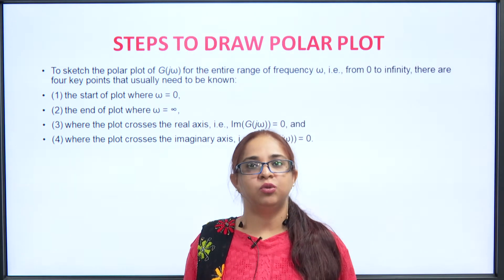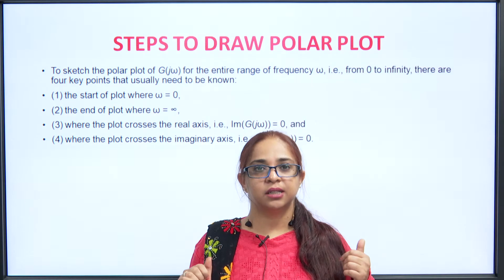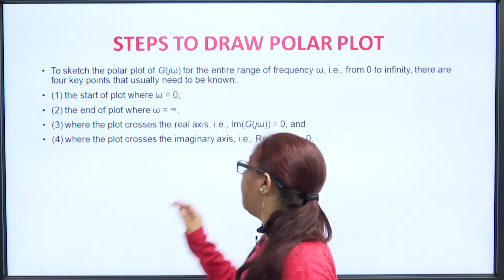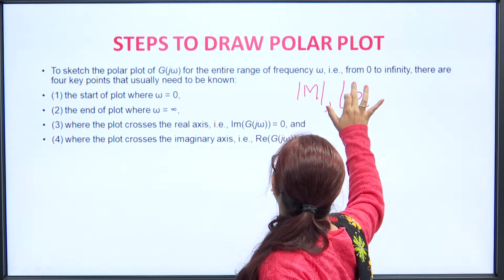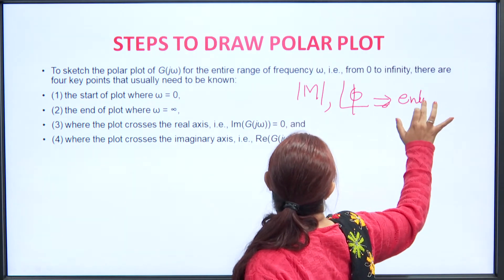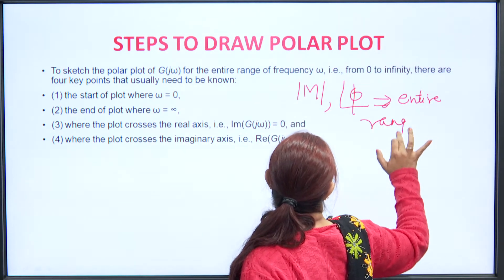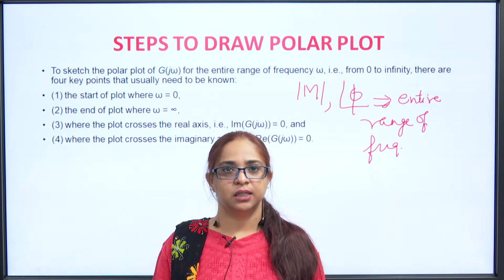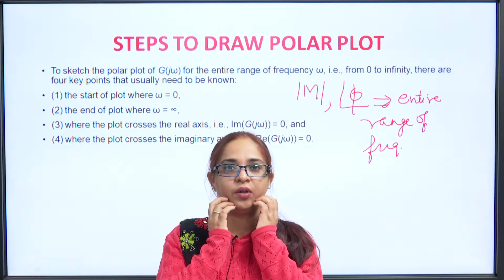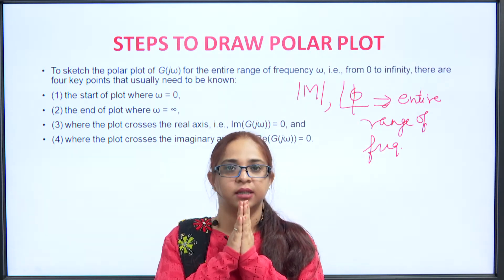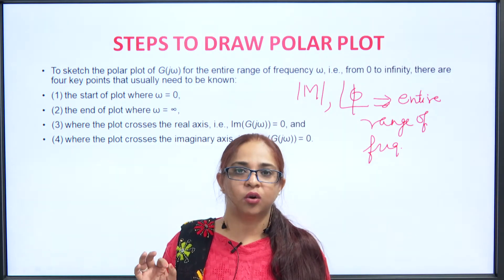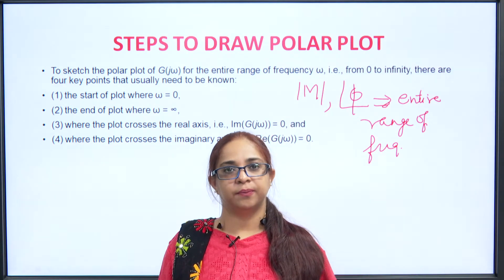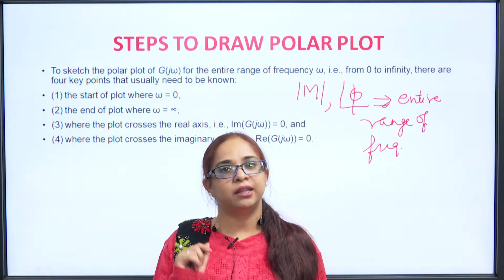Now let us understand the steps for how to draw a polar plot. In a polar plot, we are trying to plot the magnitude of the transfer function as well as the phase angle of the transfer function for the entire range of frequency. We will obtain four points for a plot and by joining all those points we can draw the plot. We will determine the starting point of the plot, the ending point of the plot, the real intercept of the plot, and the imaginary intercept of the plot.